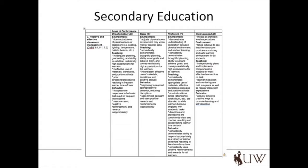There are several different rubrics for secondary education programs depending on the content area, and these are aligned to meet specific program area standards. This sample is from the Secondary Mathematics Education Program, and this portion of the rubric focuses on the critical ability to provide a positive and effective classroom environment. Note the same four levels of performance: Unsatisfactory, Basic, Proficient, and Distinguished.